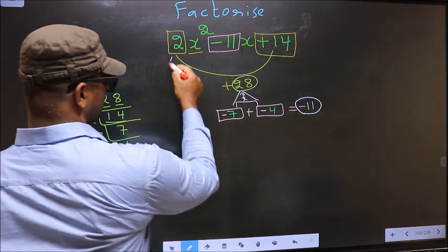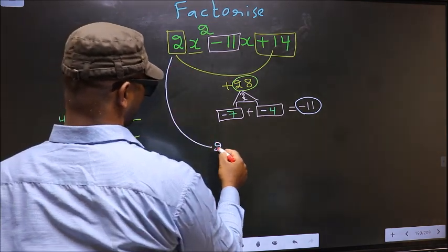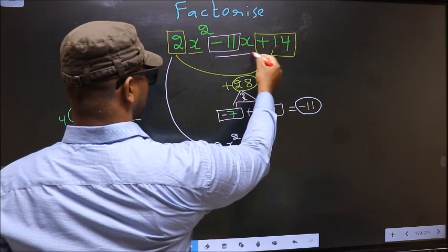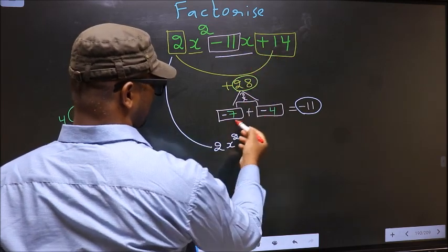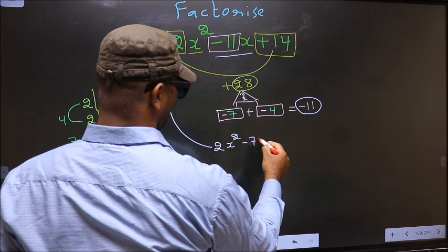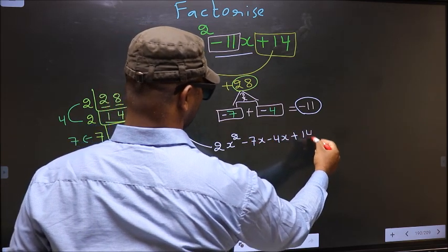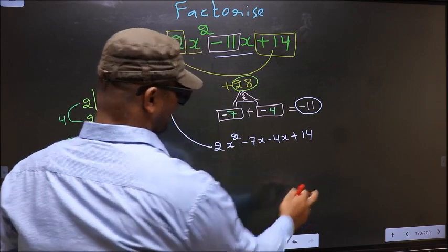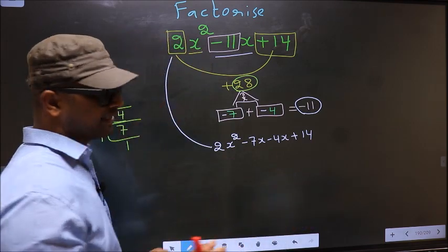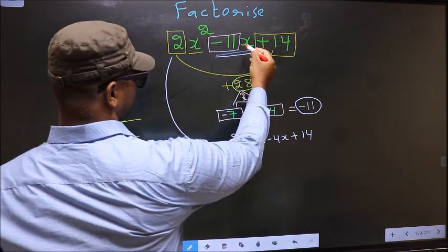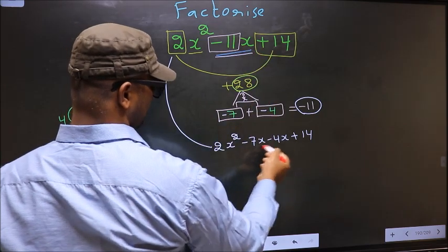Now we should change this to 2x². In place of -11x, now we should write this: -7x - 4x + 14. Did you understand? In place of -11x, we have written this.